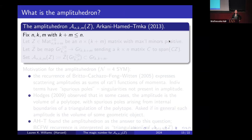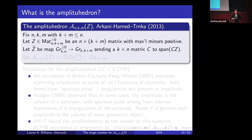Fix positive integers n, k, m and let Z be a positive n-by-(k+m) matrix. This defines a map from the positive Grassmannian G(k,n) into the Grassmannian G(k, k+m), sending a k-by-n matrix C to the span of C times Z — the amplituhedron map. The amplituhedron itself is the image of the positive Grassmannian under this map, a subset of G(k, k+m).